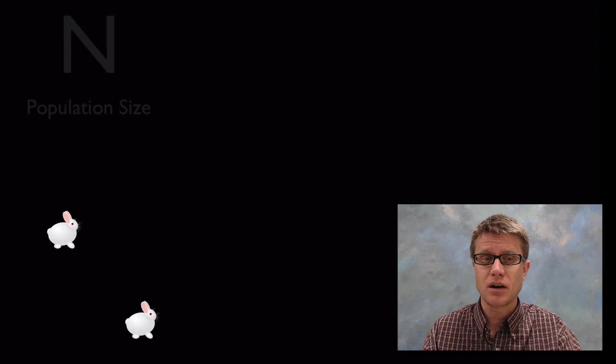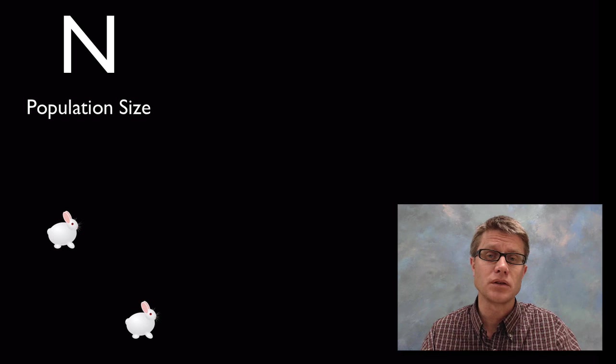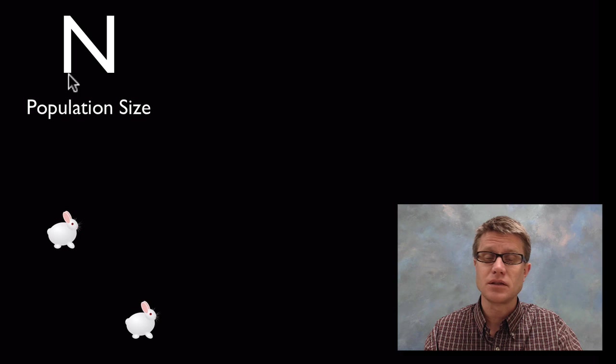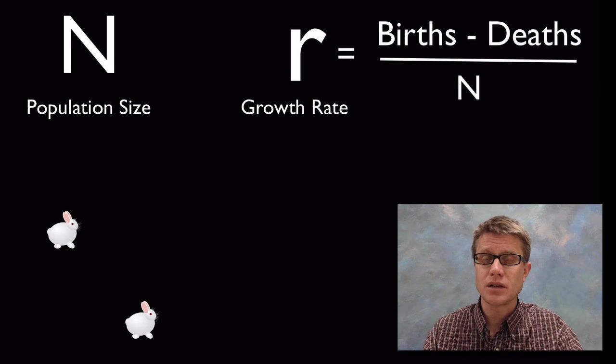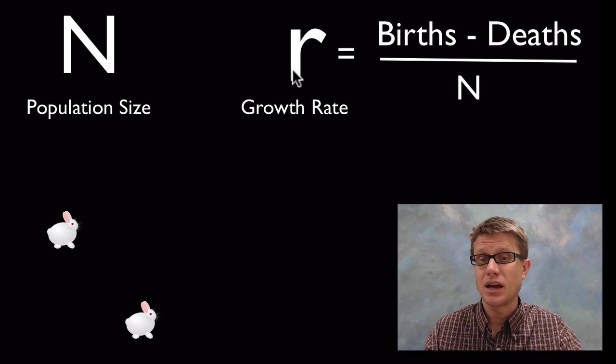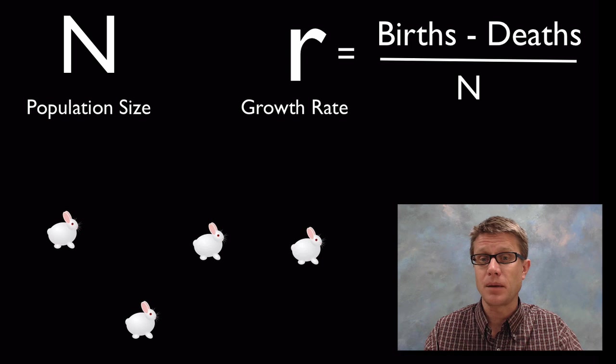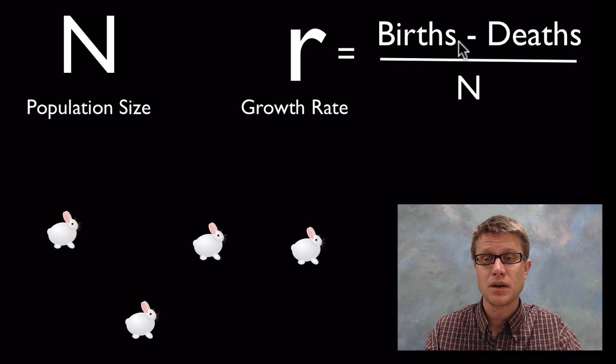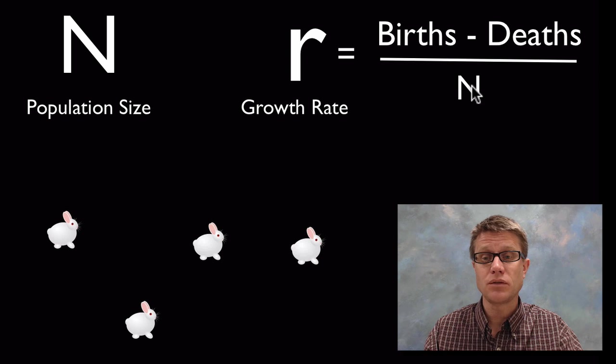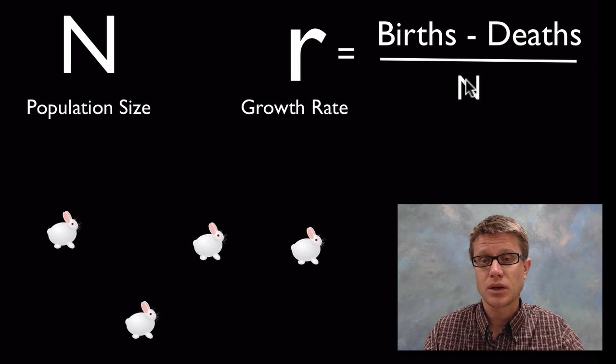Imagine we have two rabbits. Our n value is 2. So n is always going to refer to the population size. Now it's going to change over time. But to start let's say n is equal to 2. R is going to tell us how fast that population is going to change. We call that growth rate. It really is determined by two things: births and deaths. And let's say that these rabbits have two baby rabbits. And so we'd have two births minus zero deaths. So that's going to be 2 minus 0 or 2. And then we divide it by our original n which was 2. And so it's going to be 2 over 2 or 1. And if you have a growth rate of 1 things are going to go really quickly.